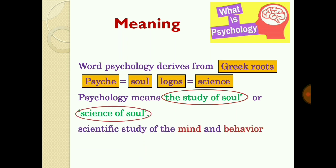Psychology is the scientific study of mind and behavior, or the scientific study of mental and behavioral processes. The mental process refers to all the internal and covert activity of our mind such as thinking, feeling, and remembering. Psychologists use the scientific method to understand behavior more precisely and accurately. The behavioral process includes all our outward and overt actions and reactions such as verbal and facial expressions and movements.